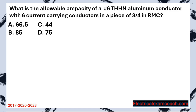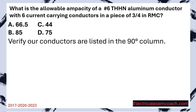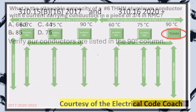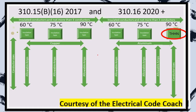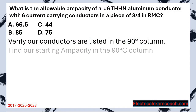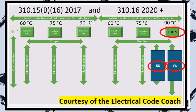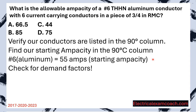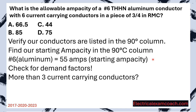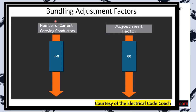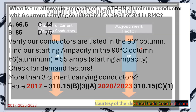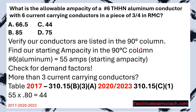Practice question: What is the allowable ampacity of a number six THHN aluminum conductor with six current carrying conductors in a piece of three-quarter inch EMT? Step one: verify THHN is in the 90 degrees C column on the aluminum side — it is. Step two: find the starting ampacity. On the aluminum side of the primary ampacity table, sliding down to number six and crossing to the 90 degrees C column gives us 55 amps. Step three: there are more than three current carrying conductors, so we head to the bundling adjustment factor table. Six conductors falls in the four-to-six range with a demand factor of 0.80. 55 amps times 0.80 gives us a new reduced allowable ampacity of 44 amps.